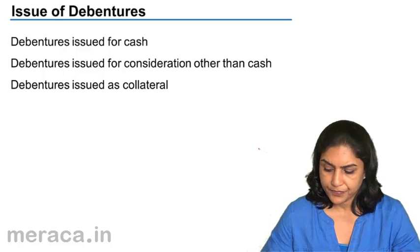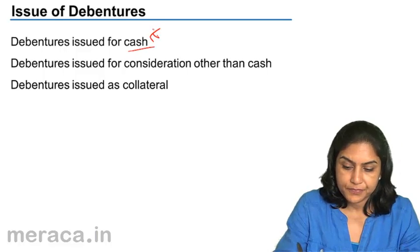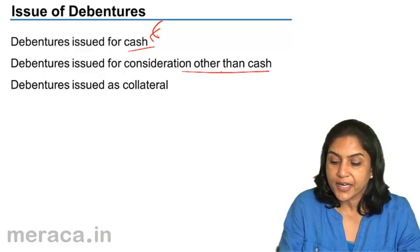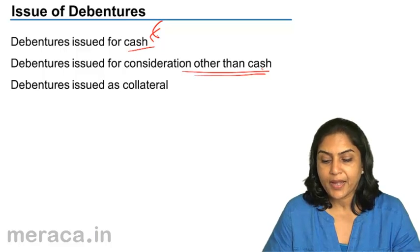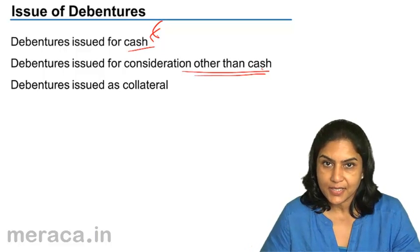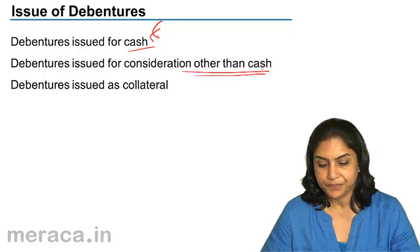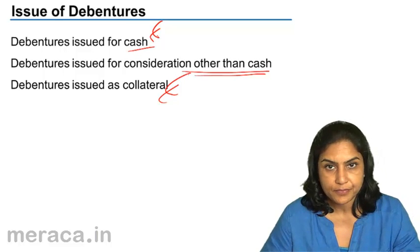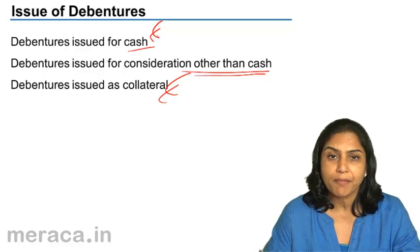Issue of debentures. Debentures may be issued for cash, or for consideration other than cash. So if a company were to buy another business or purchase some assets, instead of paying cash, they may issue debentures. Debentures may also be issued as collateral security. We will discuss each of these scenarios one by one.